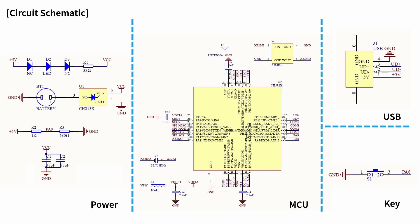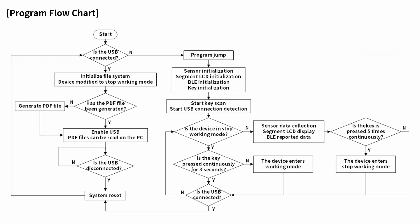The schematic we used is relatively straightforward. We used the CH-213K and connected it to a battery, and we also have some LEDs for indication like power on or failure. The program flowchart shows how the whole system works — if the USB is connected, we generate the PDF and show it on the user's desktop. If the USB is not connected, we initialize our data logging application.